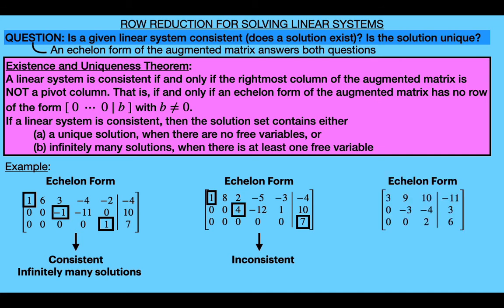And now lastly, if we consider a linear system represented by this augmented matrix in echelon form, then since none of the leading entries are in the rightmost column, the existence part of the theorem tells us that the corresponding linear system is consistent. And further, since every column of the coefficient matrix is a pivot column, making every unknown variable a basic variable, we know that there are no free variables for the system, and so the solution is unique. Now these three examples really illustrate how much we can learn about a linear system by only looking at the echelon form of the augmented matrix. But if we get so much information from an echelon form, which is easier to find than the reduced echelon form, then why do we care about the reduced echelon form? One reason is that the reduced echelon form of a matrix is unique, whereas there will always be more than one echelon form. Another reason is that once we obtain the reduced echelon form of the augmented matrix, we've essentially solved the linear system, whereas a matrix in echelon form would still require some work to solve the system.